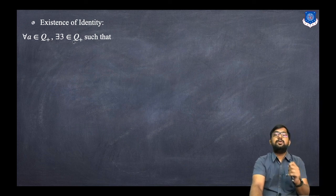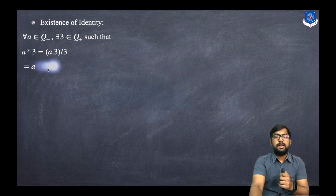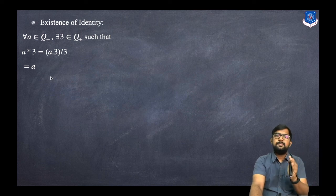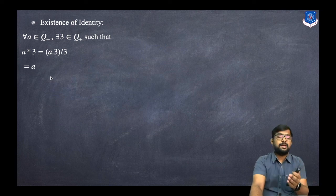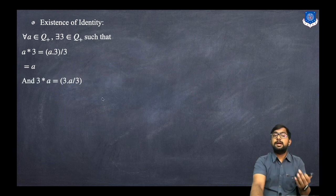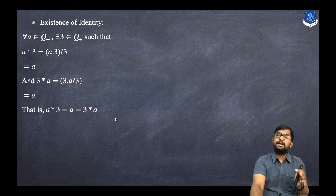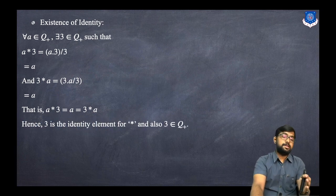For existence of identity: for every a in Q+, there exists the element 3 in Q+ such that a star 3 = a·3/3 = a. By the definition of identity we need a star e = a, and here e = 3 satisfies that. Similarly, 3 star a = 3·a/3 = a, so 3 is the identity element.